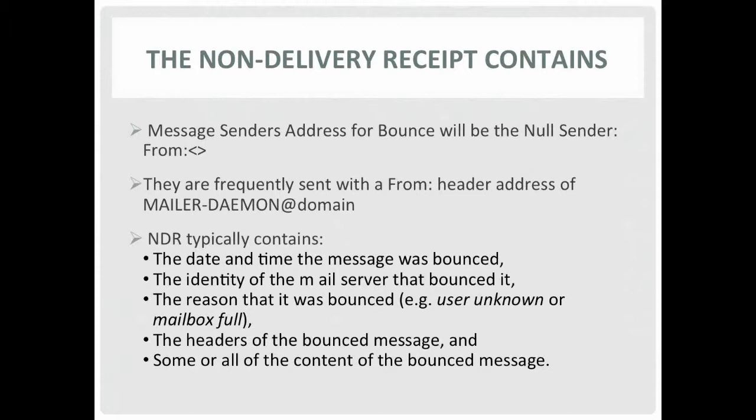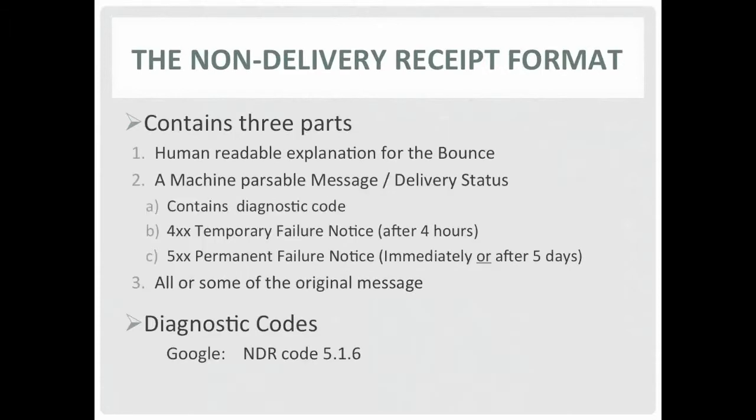The format for the reporting administrative message is defined by RFC 6522. These are not always closely adhered to and the format of NDRs can vary widely, but the parts pretty much remain the same. The first part, after the from, to, and subject, is a human readable explanation of the problem. The message also contains a parsable message delivery status, which will typically contain a diagnostic code like 422 — recipient's associated mailbox limit — or 5.1.1 user unknown.